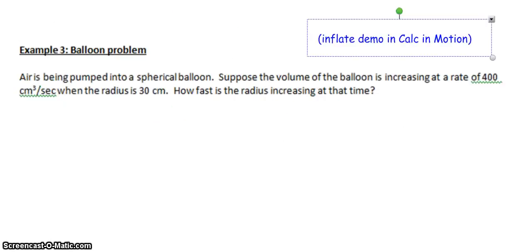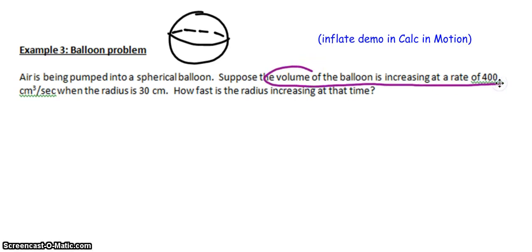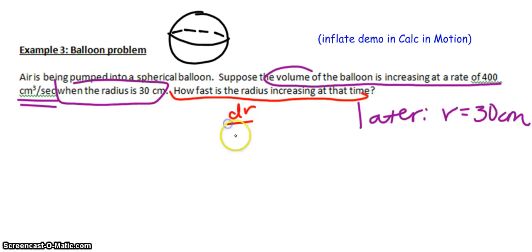Okay. The next one has a title too. The balloon problem. Oh, I love this one. Let me read it. It says, air is being pumped into a spherical balloon. So that means it's shaped like a baseball. Suppose the volume of the balloon is increasing at a rate of 400 cubic centimeters per second. When the radius... Oh, this is going to be later. Later. When the radius is 30 centimeters. That's going to be later. Okay. How fast is the radius increasing at that time? So what we're solving for is dr/dt.